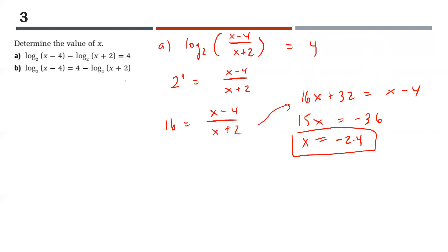For logarithmic equations it's good practice to check your answers by plugging them back in. When we plug in x equals negative 2.4, we find we'd be taking the logarithm of a negative number, which is undefined. So this is actually a false answer — there is no solution to part A.